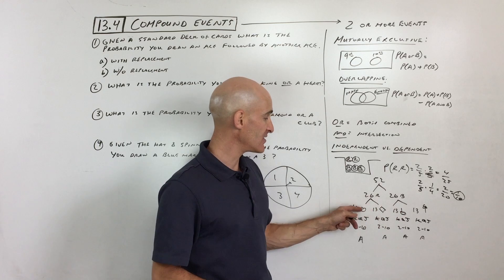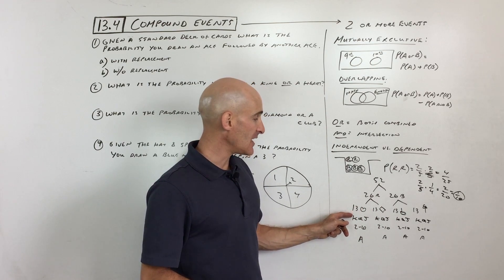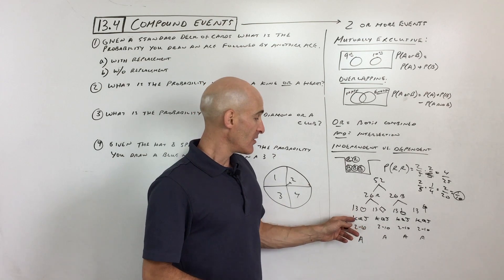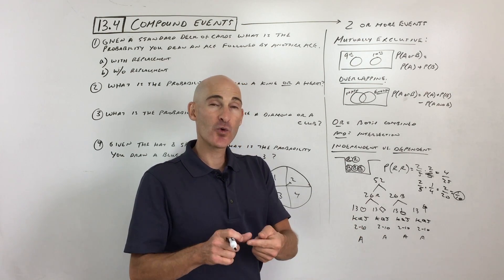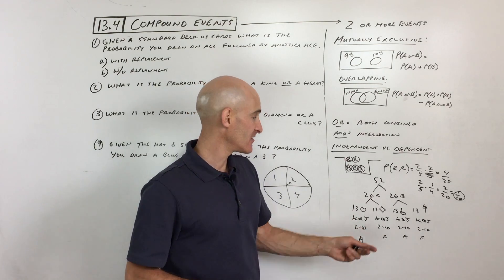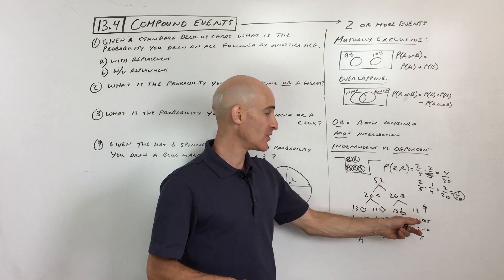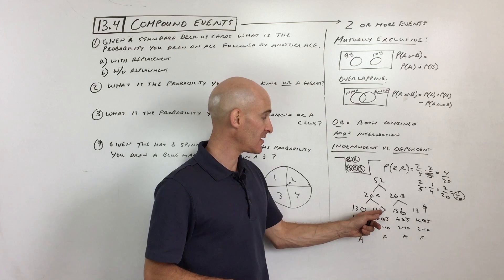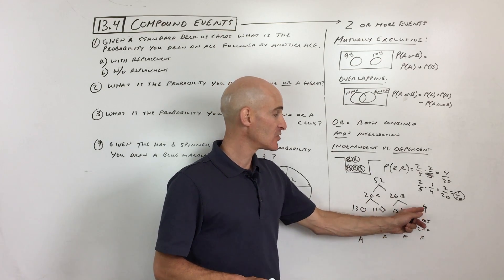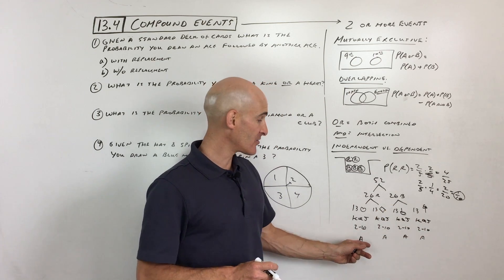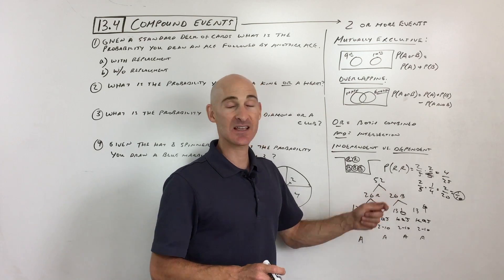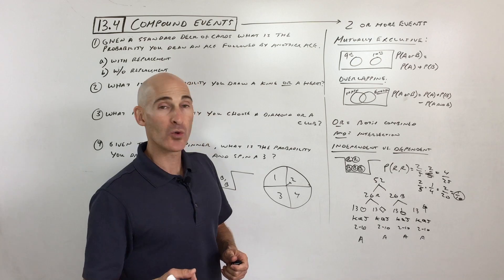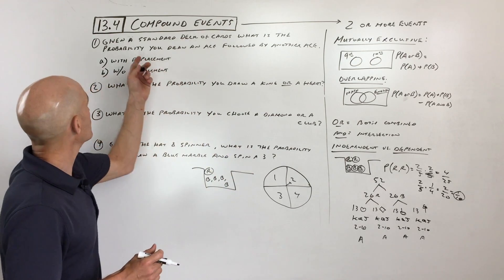These four groups are called suits. Each suit has a king, a queen, and a jack. They also have numbered cards — two through ten — of hearts, diamonds, spades, and clubs. And there's an ace of hearts, ace of diamonds, ace of clubs, and ace of spades.